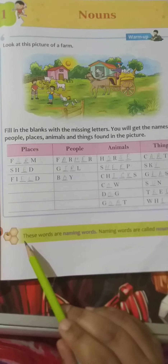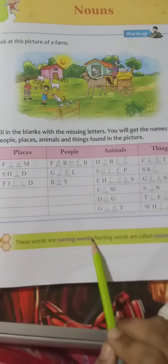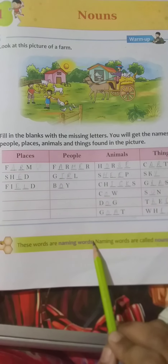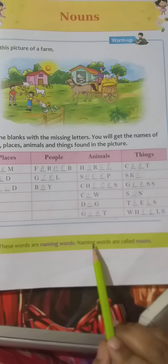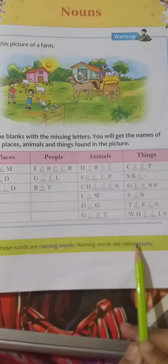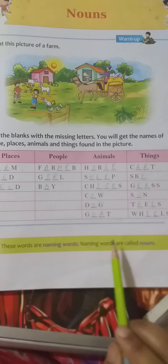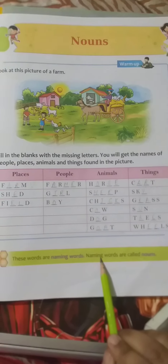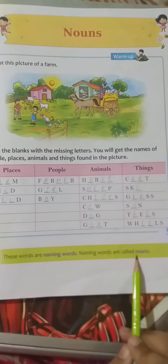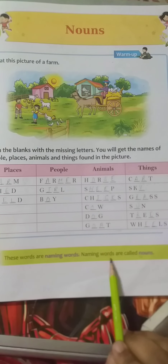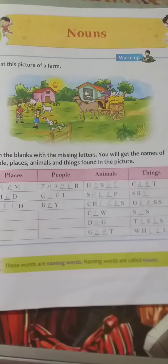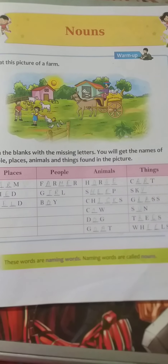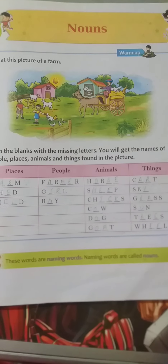Now let's learn. These words are naming words. Yeh jo sare words humne parhe hain, inhein hum naming words kehte hai. Naming words are called nouns. Jo bhi kisi ka naam hota hai, usse hum nouns kehte hai. Jo bhi kisi cheez ka naam hota hai, usse hum nouns kehte hai.